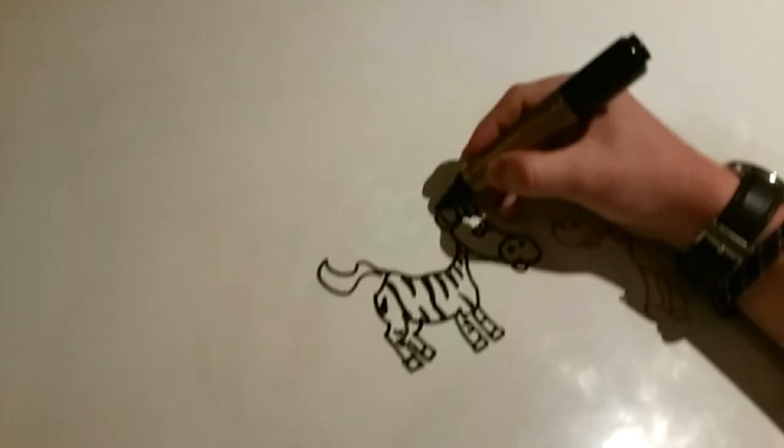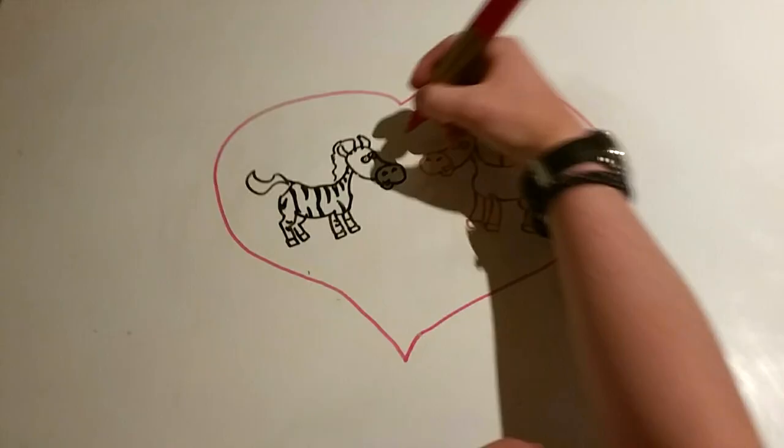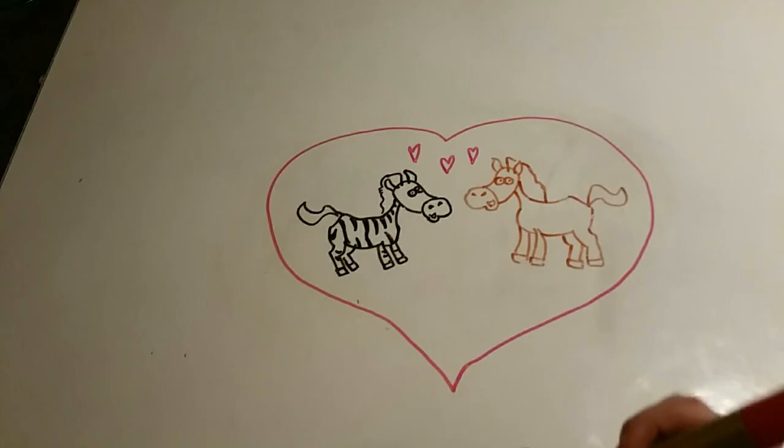However, hybridization has some disadvantages as well. When humans artificially choose parents, this becomes what's known as a crapshoot, a gamble. Such as in racehorses, the best is mated with the best. However, sometimes this can backfire and the worst traits from both parents can be inherited.